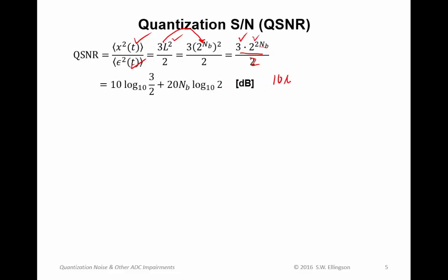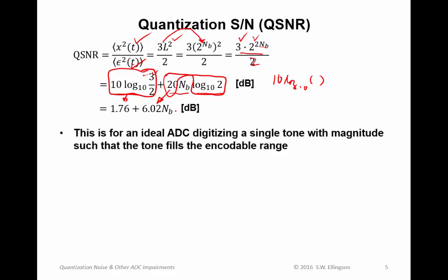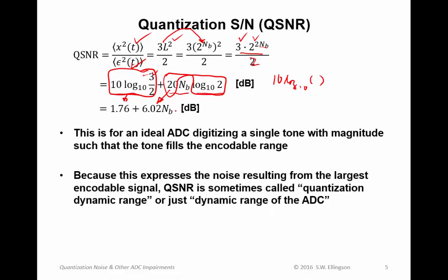In dB, that is simply taking 10 times log base 10 of the quantity, we obtain 10 log base 10 of 3 halves times 20 times the number of bits times log base 10 of 2. And this quantity I can compute, that's simply 1.76. And this quantity, 20 times log base 10 of 2, I can compute, that's simply 6.02. So I find that under the assumptions I've made, the quantization signal-to-noise ratio is 1.76 plus 6.02 times the number of bits in dB.